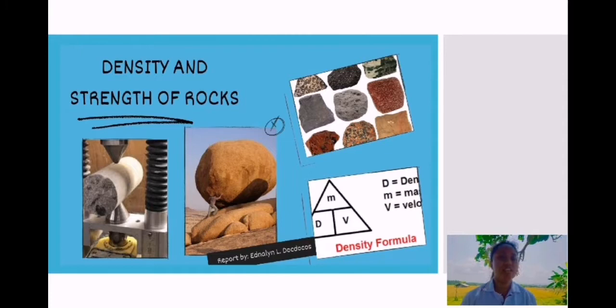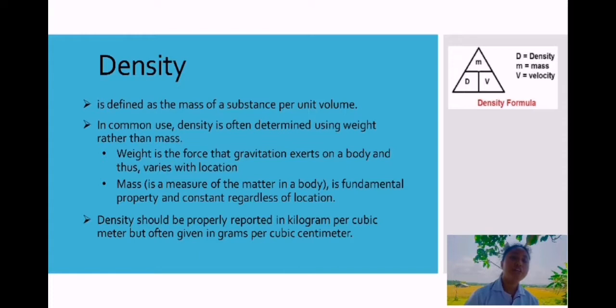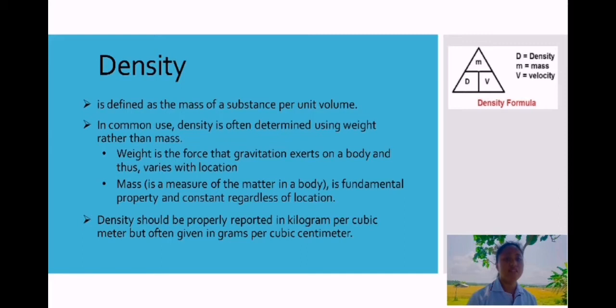Hello everyone, I am Ednaline and today I am going to discuss to you the density and strength of rocks. So first, let me begin in giving you a brief description about density. Density is defined as the mass of a substance per unit volume. But in some cases, density is often determined using weight rather than mass. And to differentiate the weight from mass, weight is the force that gravitation exerts on a body and varies with location. While mass, on the other hand, is the measure of the matter in a body that is constant regardless with the location. And lastly, density is reported in kilogram per cubic meter but sometimes given in a grams per cubic centimeter.